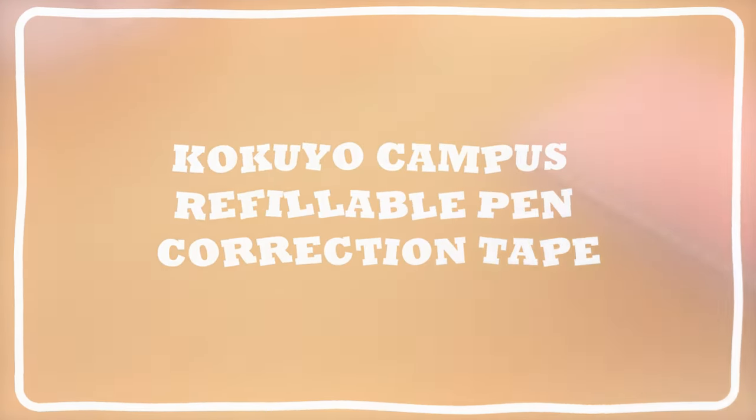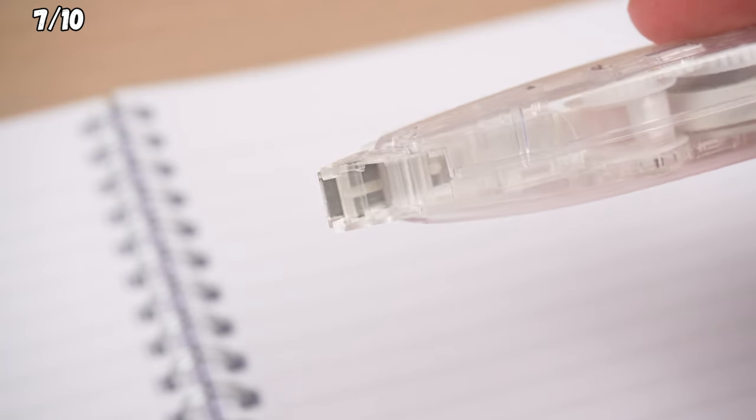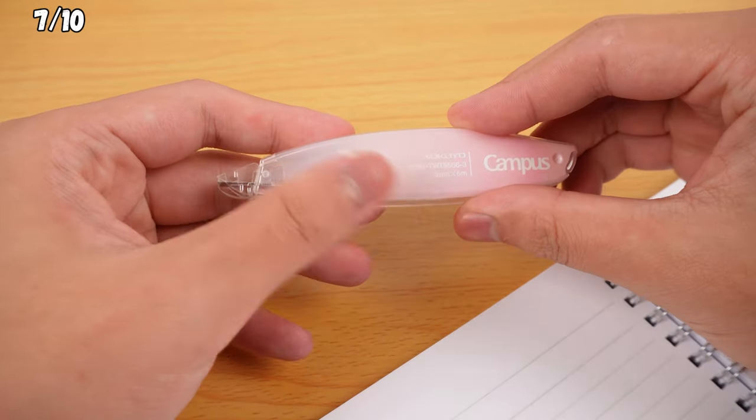Kokuyo Campus Refillable Pen Correction Tape in Pink. This correction tape comes with a metal tip head that's a step up from the usual plastic ones. It slices through tape like a pro and is practically silent. The high-quality tape sticks tight to the paper. Plus, you can swap out the tape when needed. It's a sleek and functional choice.